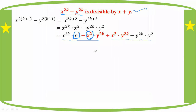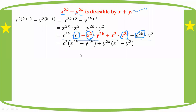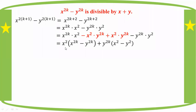Consider x to the power 2k minus 1 to the power 2k. We use a squared minus b squared equals (a+b)(a-b). So x to the power 2k minus 1 to the power 2k can be written as a squared minus 1 squared. Therefore x to the power 2k minus 1 to the power 2k is divisible by x plus y by the inductive hypothesis.